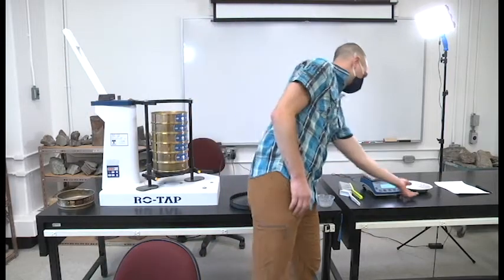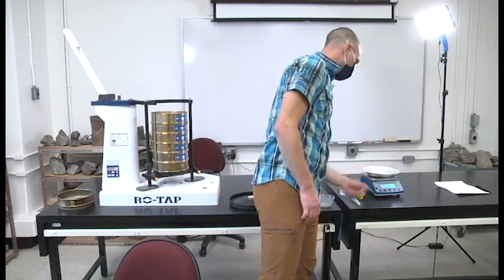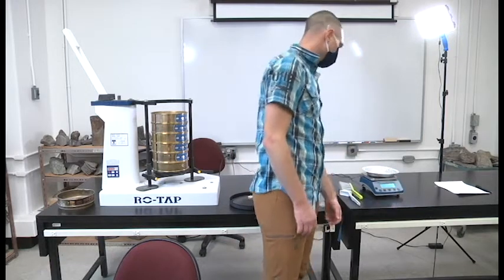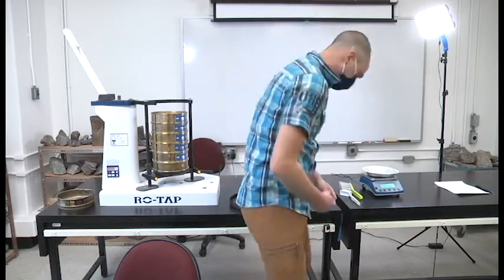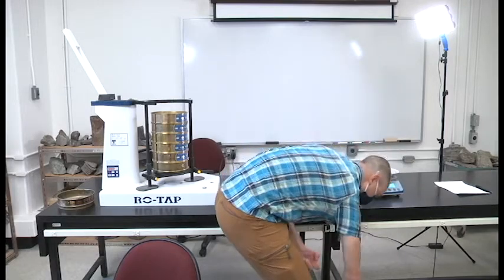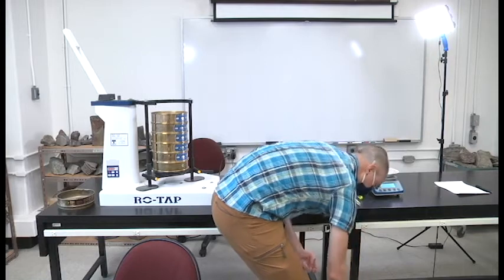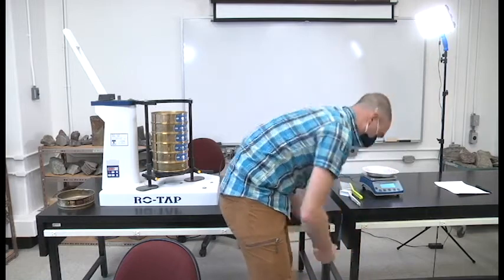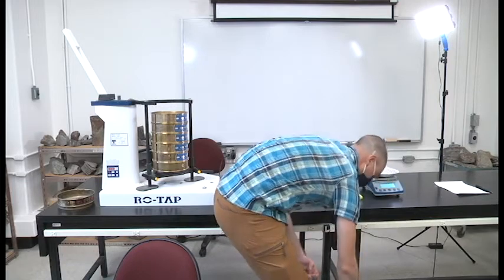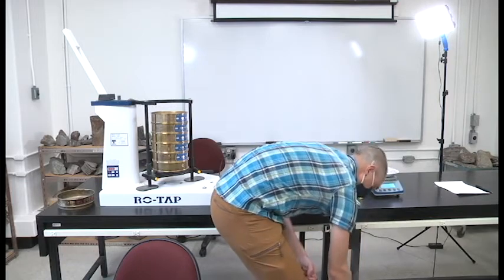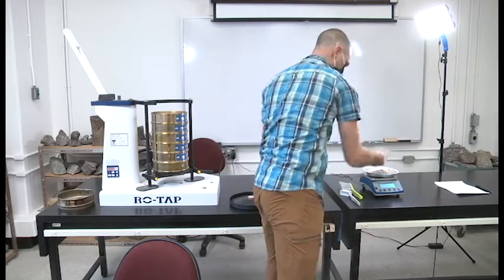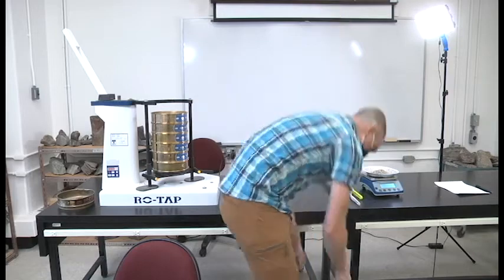For this test, we need to get about one kilogram of the material. I'll just put a pan on the scale and zero it. Now I'm just going to take a sample of material. It's important that you get a representative sample, so I'm just going to mix it and poke around a bit before sampling. I'm going to aim for 1350 grams.